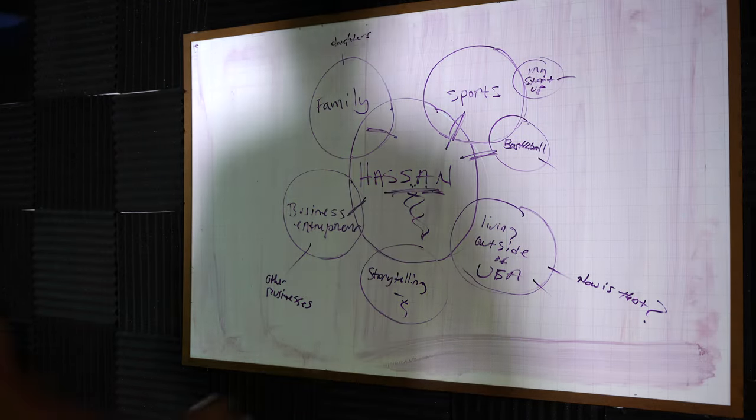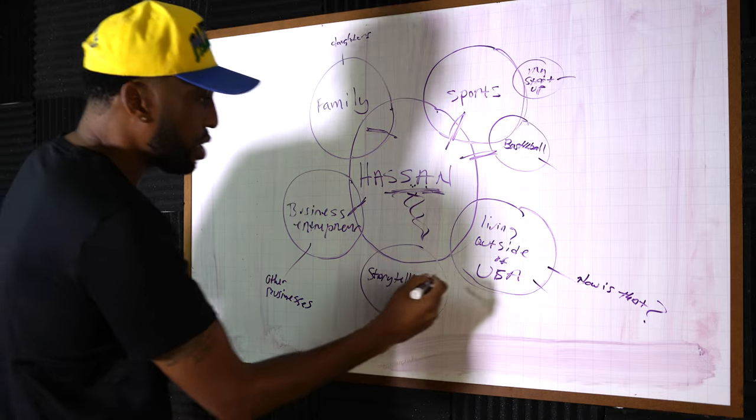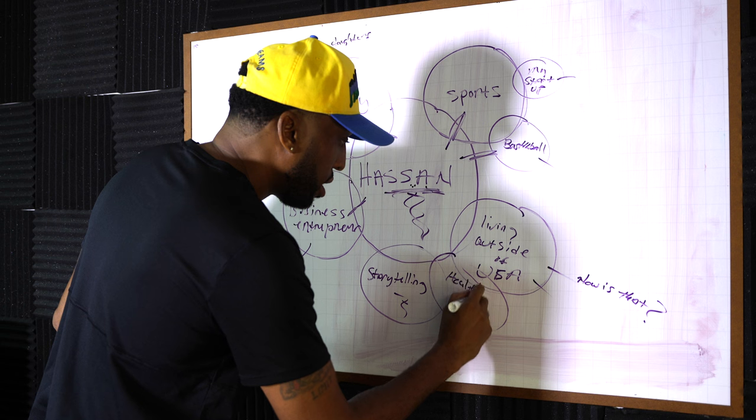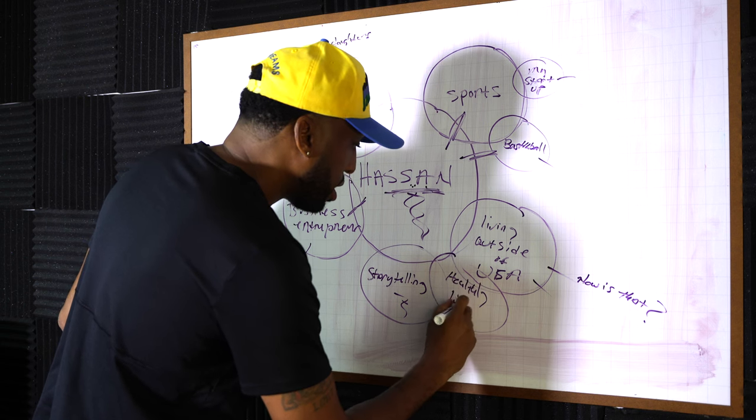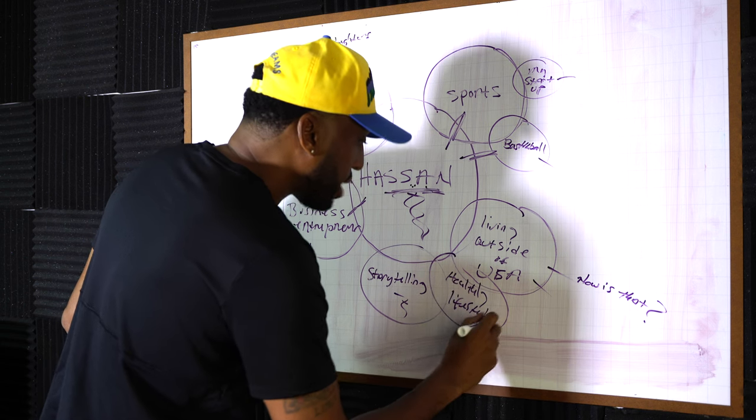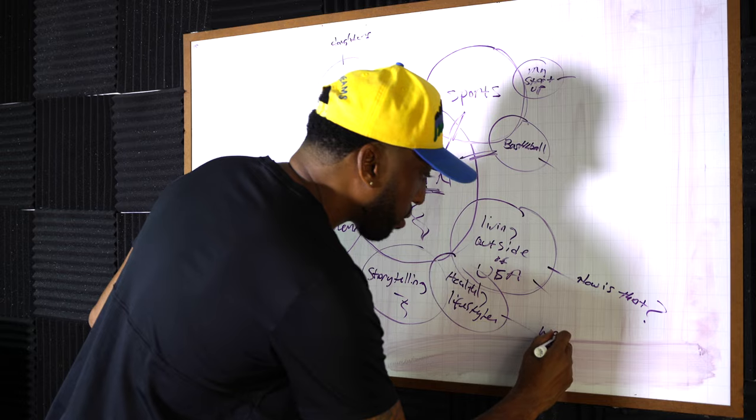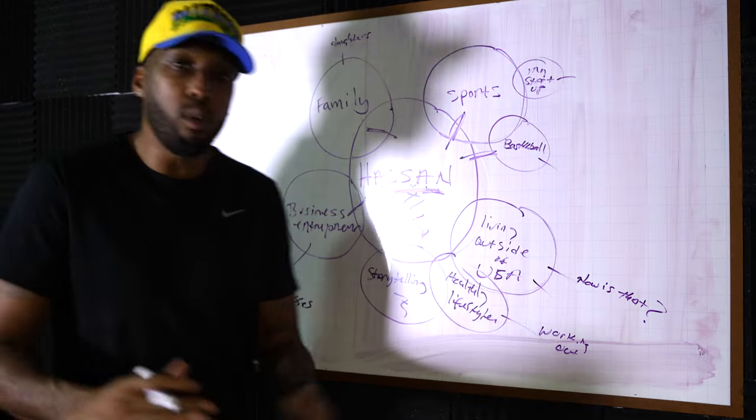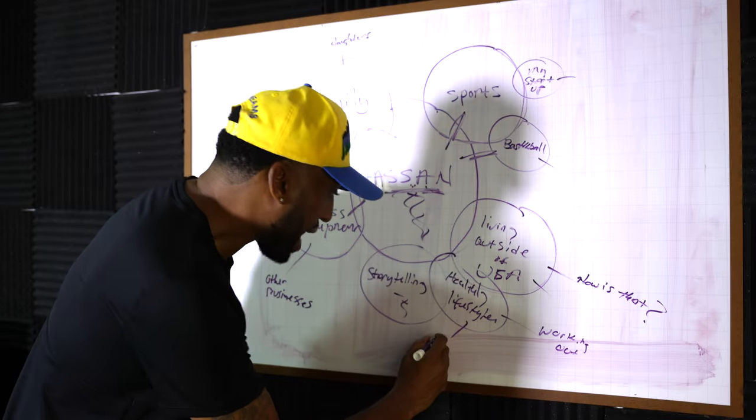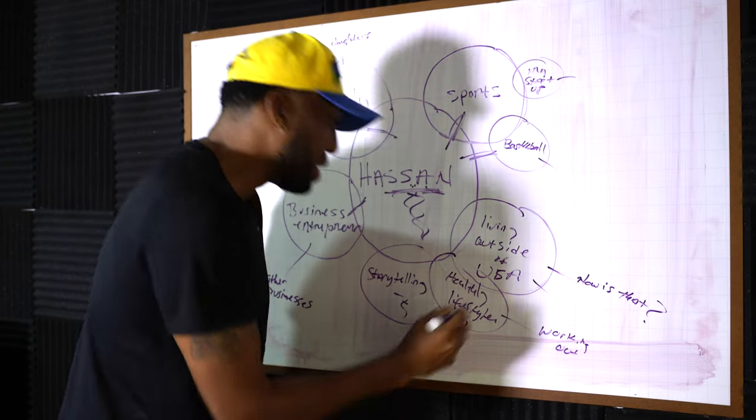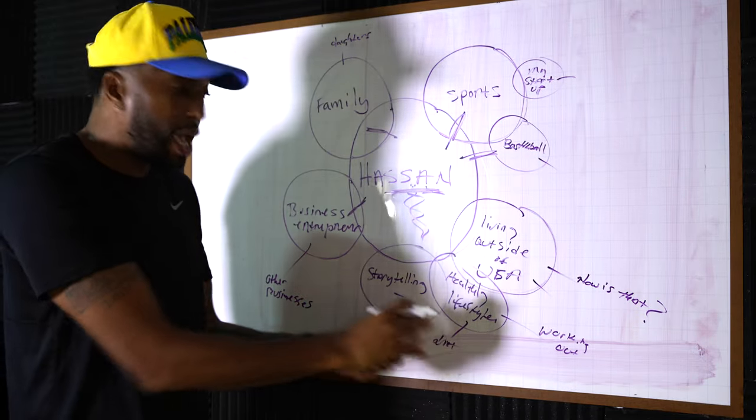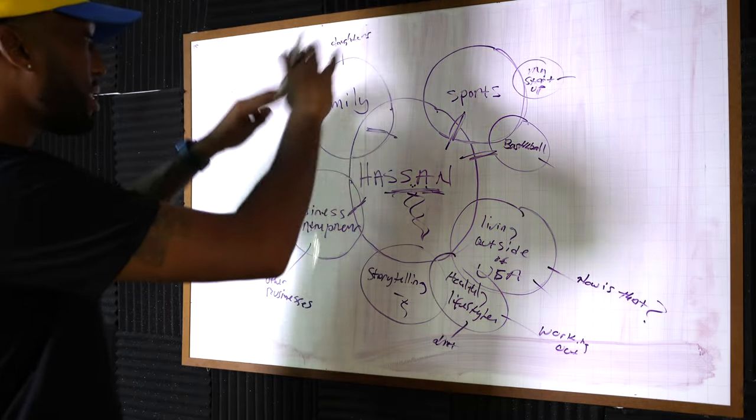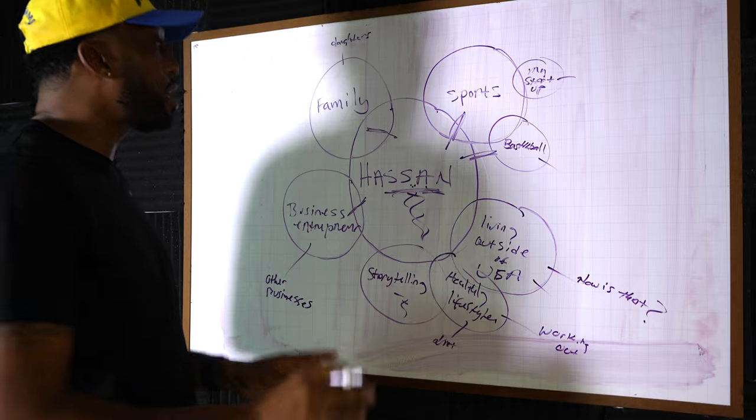We can do more, right. I can branch this into living a healthy lifestyle, working out. What do I do when I work out? Healthy lifestyle, diet, right, diet. I can talk about my diet, what I eat. That's part of healthy lifestyle.